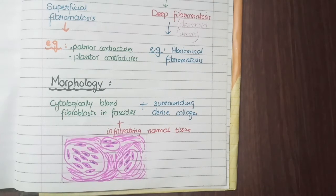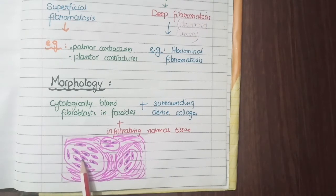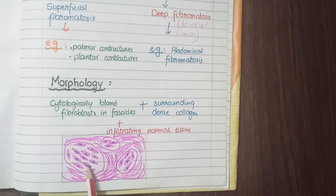Cytologically bland means they lack any specific or remarkable cellular features and are simply like normal appearing cells. In this diagram, you can see these are cytologically bland fibroblasts arranged in the form of fascicles.